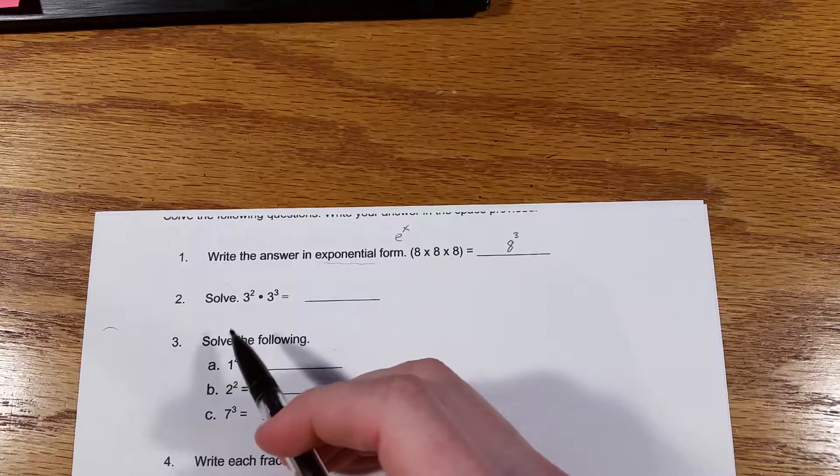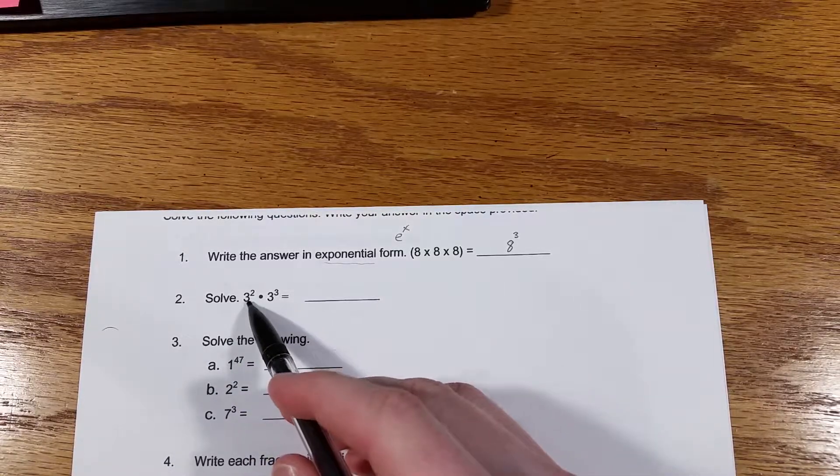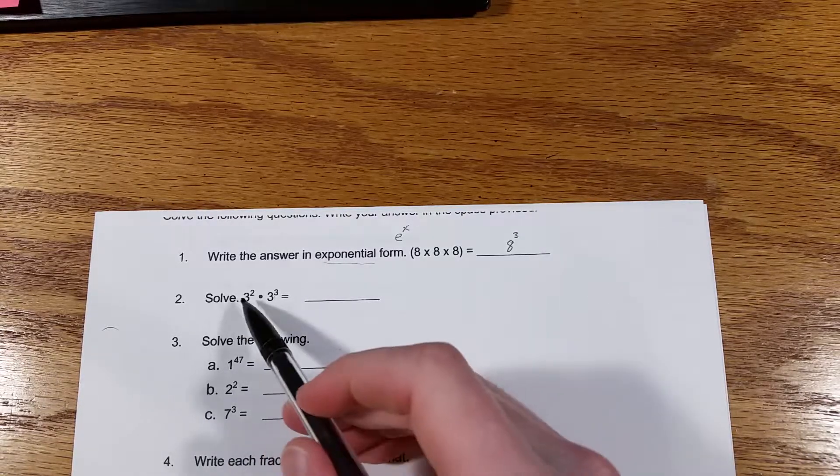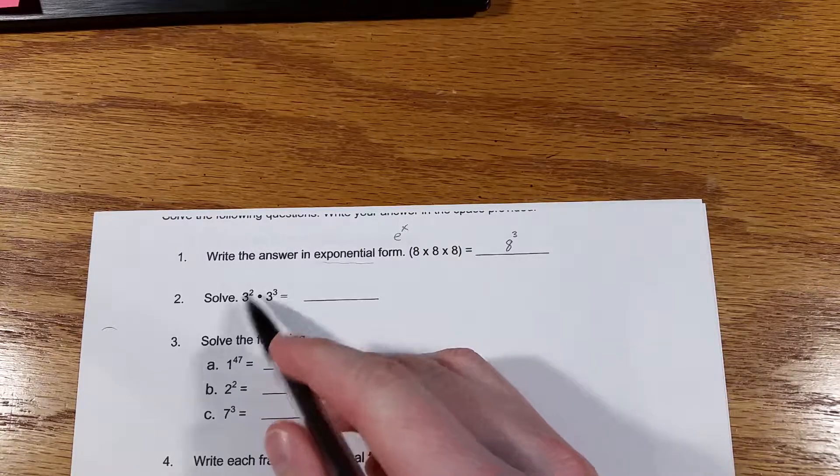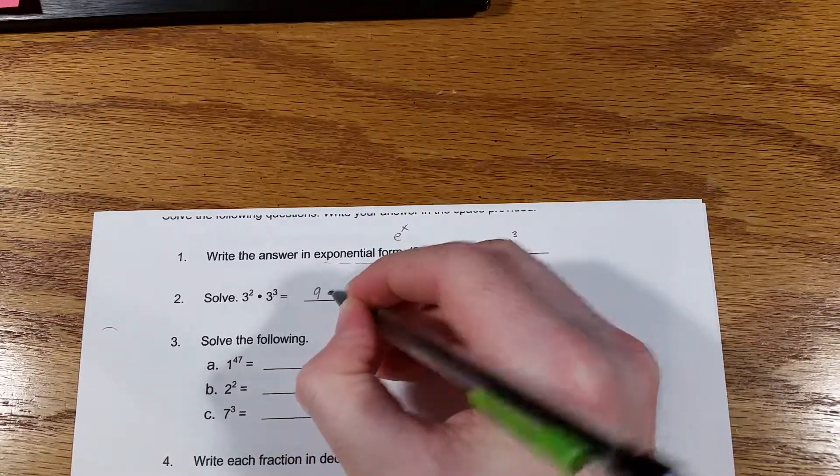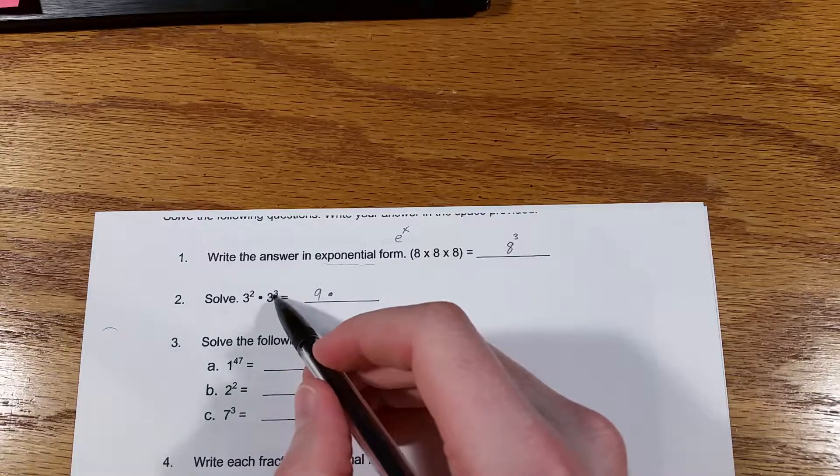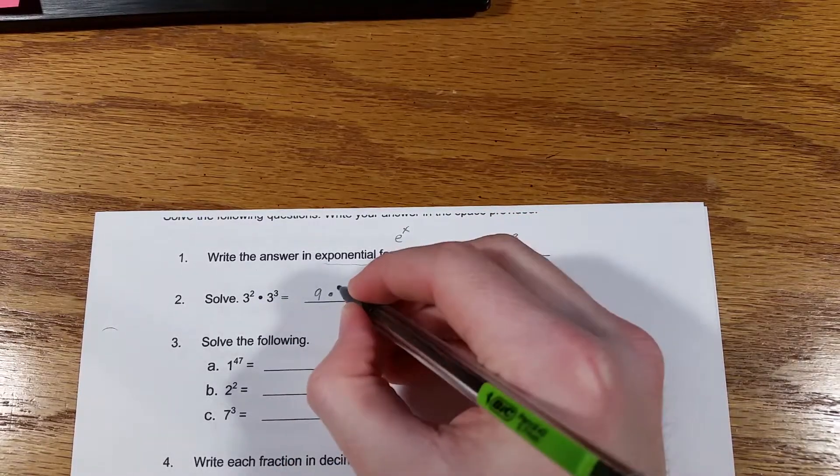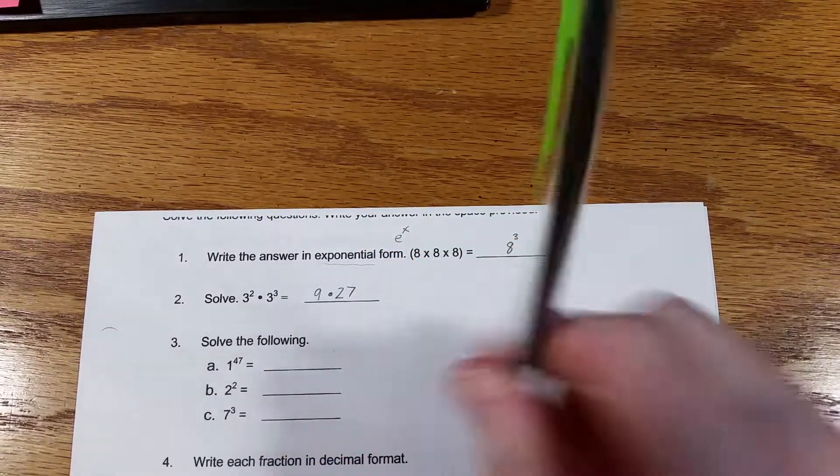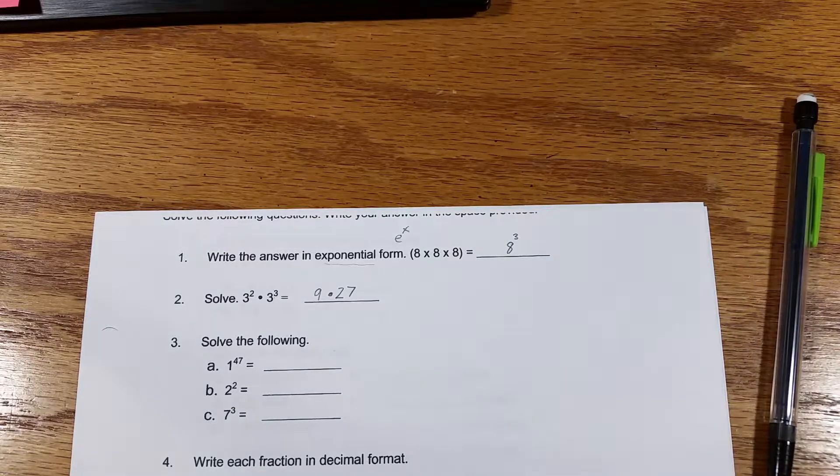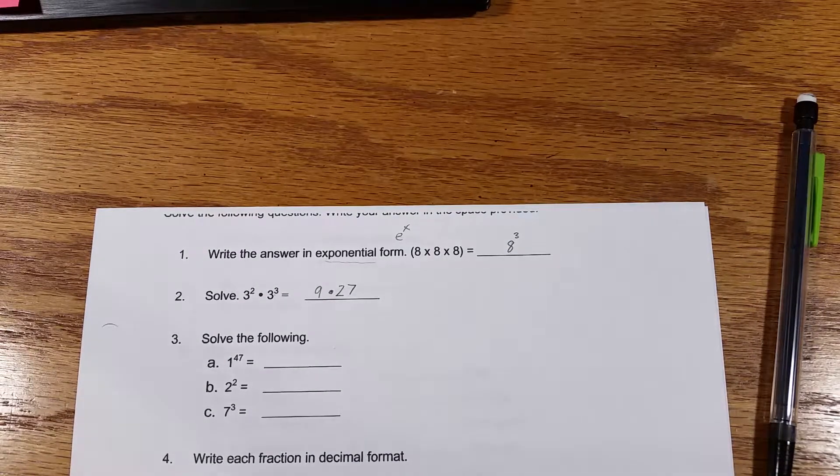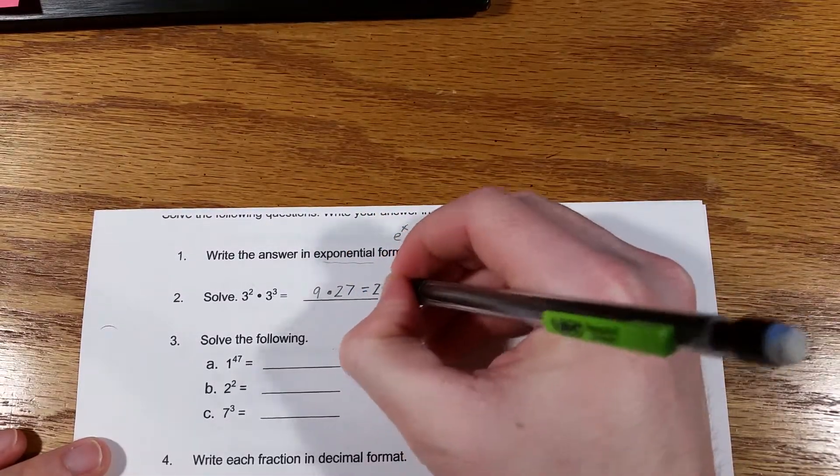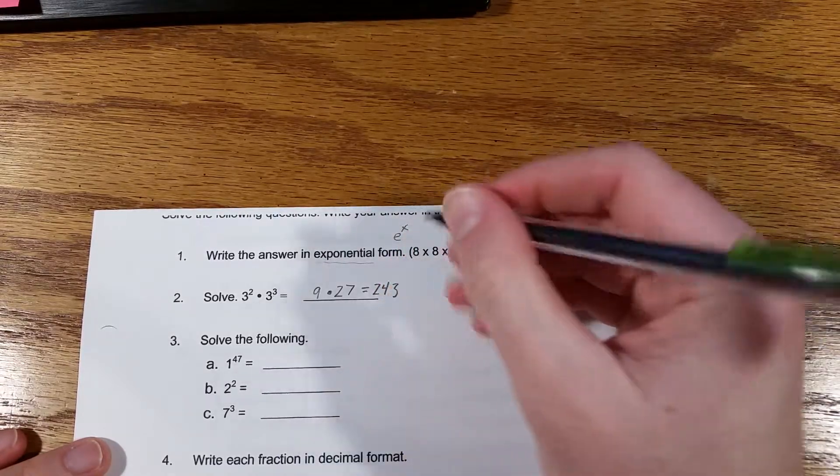Number two, solve 3 squared times 3 to the third. So 3 squared means 3 times 3, and that is 9. And 3 to the third means 3 cubed, so 3 times 3 is 9 times 3 again is 27. And let's see what 9 times 27 is. I had to use a calculator for that one, in case you were wondering.